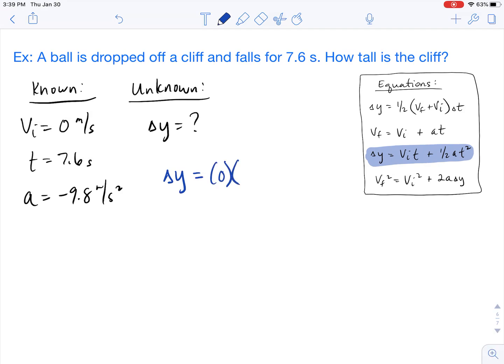Vi is zero. Our time is 7.6 seconds plus one-half acceleration negative 9.8 times the time squared, 7.6 squared.